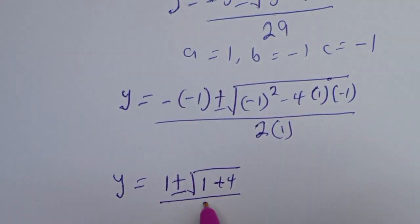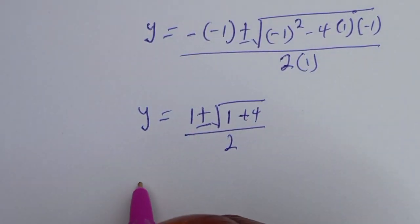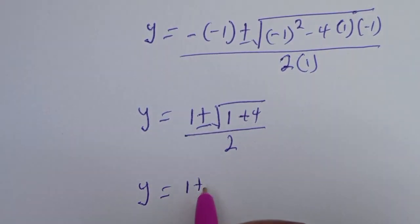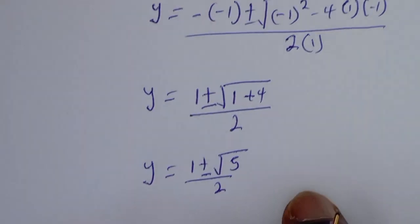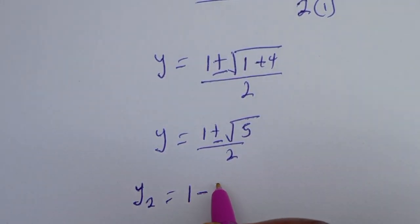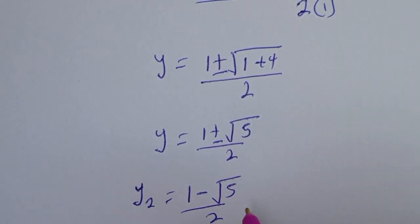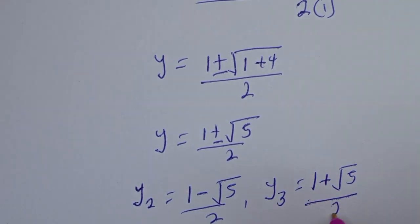Everything over 2. So Y is equal to 1 plus or minus square root of 5 over 2. Therefore Y2 is equal to 1 minus root 5 over 2, and Y3 is equal to 1 plus root 5 over 2.